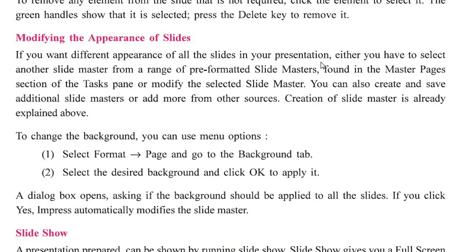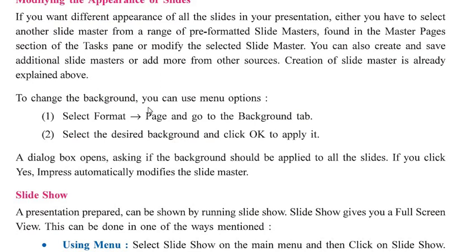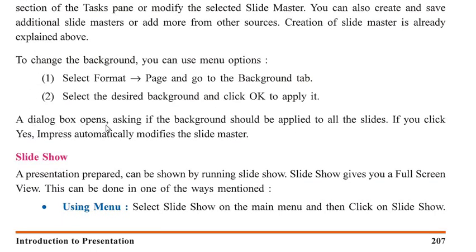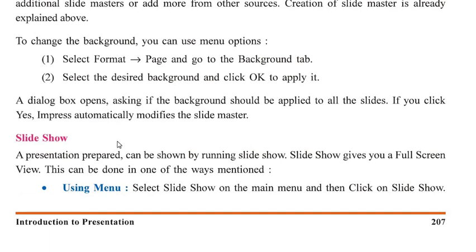Modifying the appearance of slides: if you want a different appearance for all slides in your presentation, either select another slide master from the pre-formatted slide masters in the Master Pages section of the task pane, or modify the selected slide master. You can also create and save additional slide masters. To change the background, use the menu option: select Format > Page and go to the Background tab. Select the desired background and click OK. A dialog box asks if the background should be applied to all slides; if you click Yes, Impress automatically modifies all slide masters.